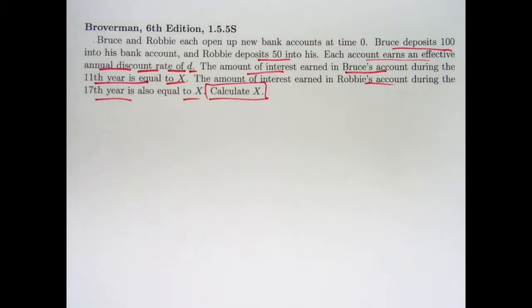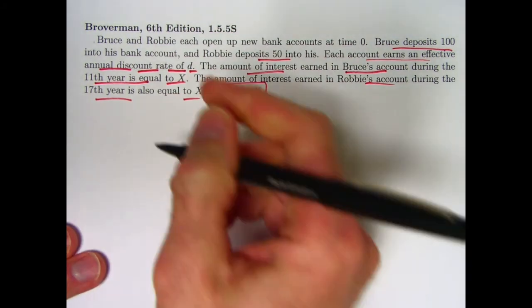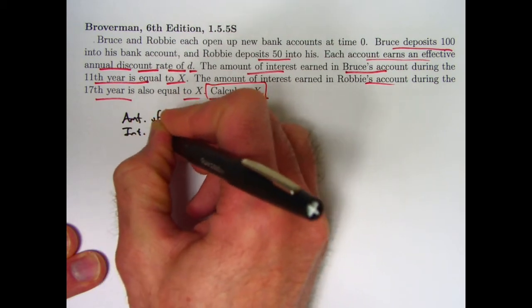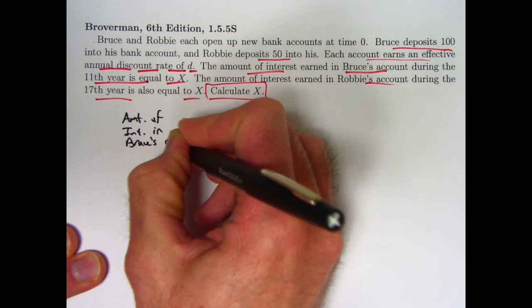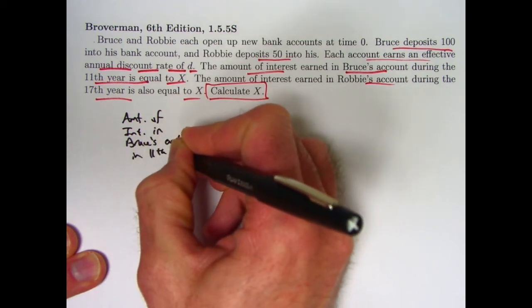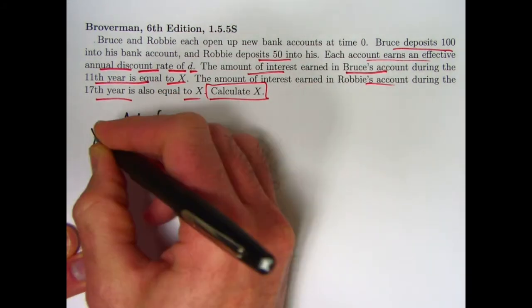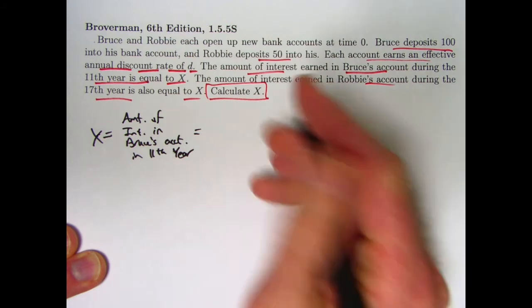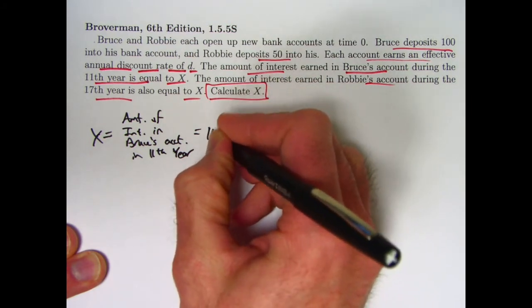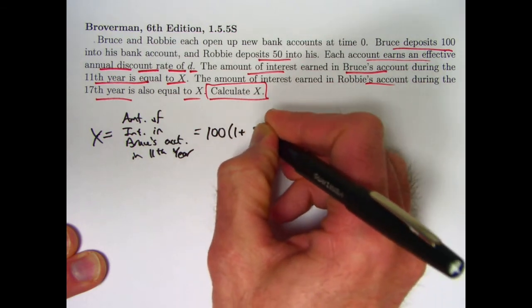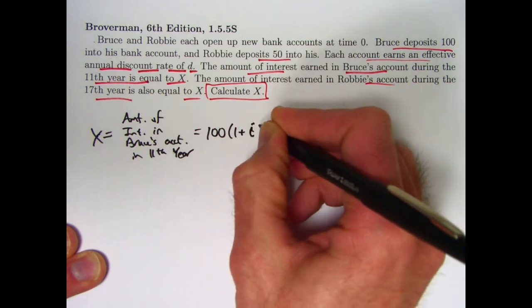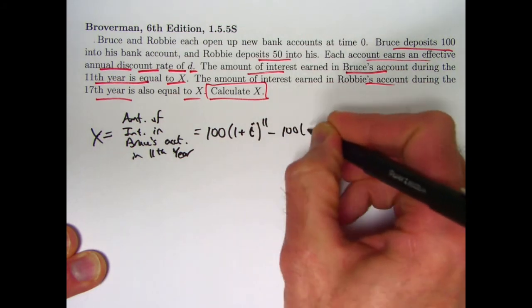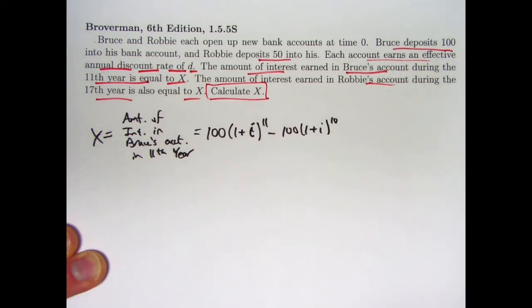So again, let's solve this problem not worrying about what effective annual discount rate is at first. What is the amount of interest in Bruce's account in the 11th year? That is going to equal this unknown x that we want to solve for. There's a quick way to write down this expression, but I want to solve it initially, write it down in terms of a less quick way of writing it down. Write it as the difference. How much has it grown to after 11 years have gone by? Okay, this is an effective annual rate, so I don't need to divide by n here. 11. That's the amount it's grown to after 11 years, and here's the amount it's grown to after 10 years, and the difference then would be the amount of interest earned during the 11th year.